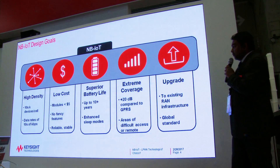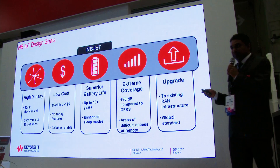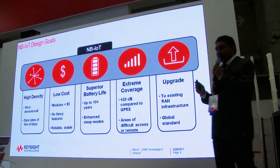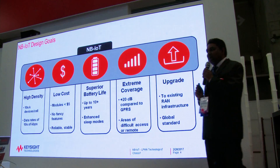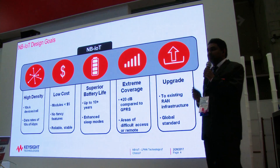These are the five design goals laid out for NB-IoT. First is high density — massive connections are very important. Some predictions estimate 5 billion LPWA connections by 2022, making massive connectivity so important. One key requirement is to have at least 50,000 connections per cell.